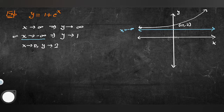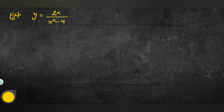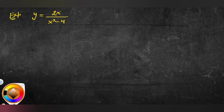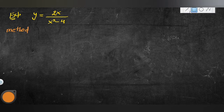کچھ questions میں آسانی سے value put کرکے asymptote مل جاتا ہے لیکن ہر question اتنا آسان نہیں ہوتا۔ مثال کے طور پر y = 2x/(x² − 4)۔ اس کے asymptote ڈھونڈنے کے لیے دو methods ہیں۔ Method 1: پہلا وہی method جو ہم پہلے استعمال کر چکے ہیں۔